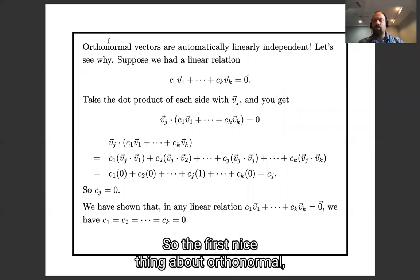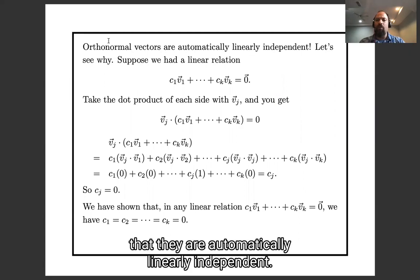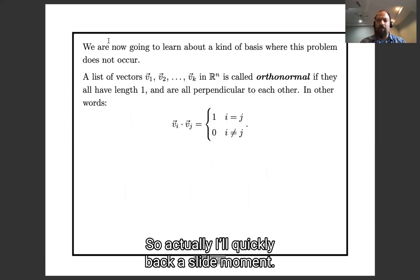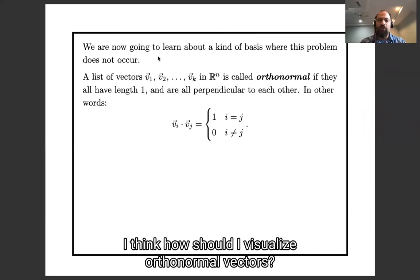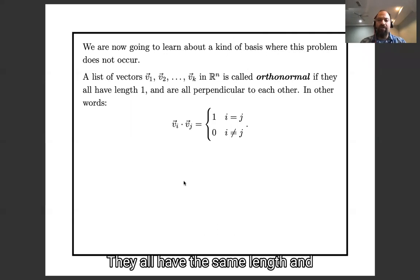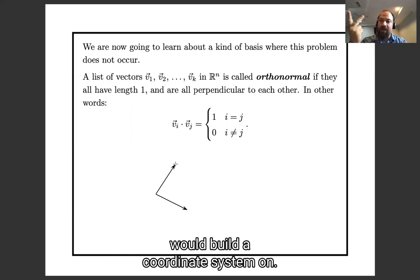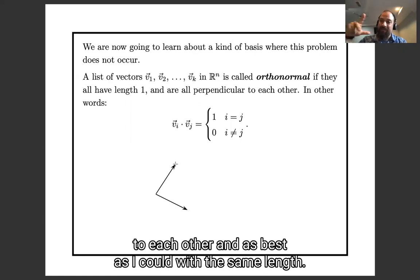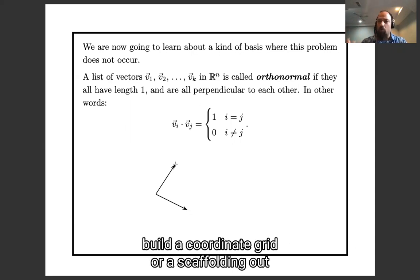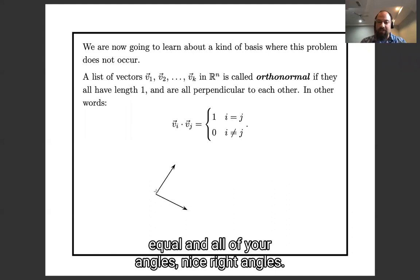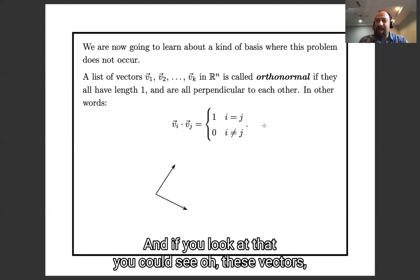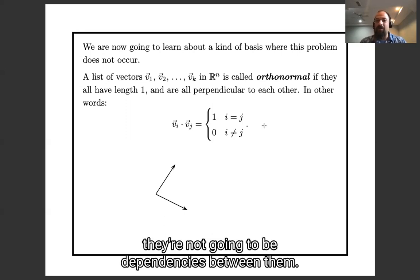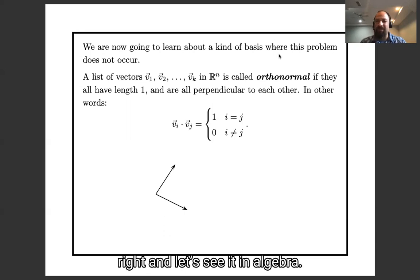So the first nice thing about orthonormal vectors is that they are automatically linearly independent. So geometrically, if you want to think how should I visualize orthonormal vectors, they all have the same length and they're all nice and perpendicular. So here's one, here's another one, same length, perpendicular. You should think about them like a rigid frame that you would build a coordinate system on. It's the sort of rigid frame that you would build a coordinate grid or a scaffolding out of, with all your distances equal and all of your angles nice right angles. And if you look at that, you can see these vectors look linearly independent. There are not going to be dependencies between them.